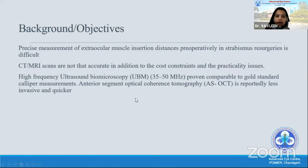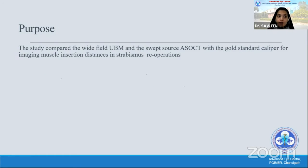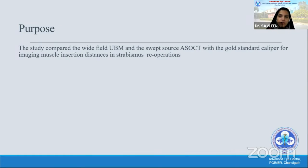More recently, the anterior segment OCT has also been reported to detect extraocular muscle insertion distances from the limbus. We did a study to compare the wide-field UBM and the swept-source OCT and then compared them with the gold standard caliper for imaging muscle insertion distances, only in strabismus re-operations, because in treatment-naive patients we might not need a UBM or ASOCT to detect muscle insertions.